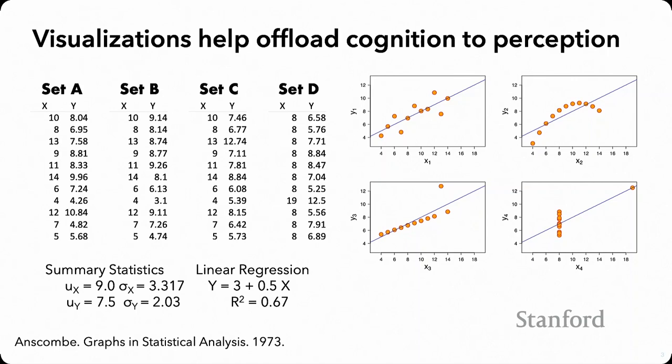For example, Anscombe's Quartet — many of you have potentially seen before. It's a set of four data sets which would look identical if we were to summarize them using summary stats like the mean and the variance of X and Y. If we run a regression, we get the same regression equation. These four data sets were created specifically to show that summary stats are limited. When we visualize them, we immediately see aspects of distribution that we would otherwise miss.